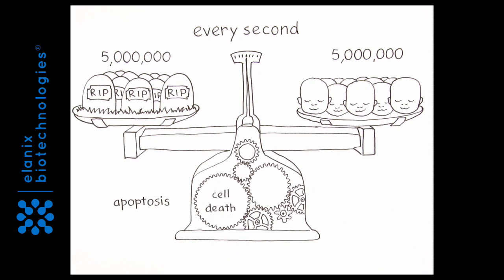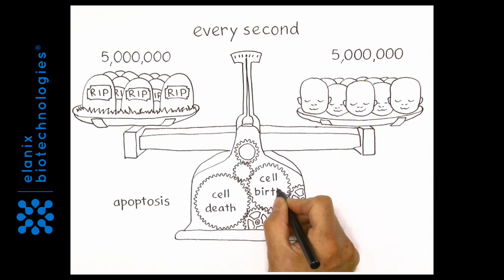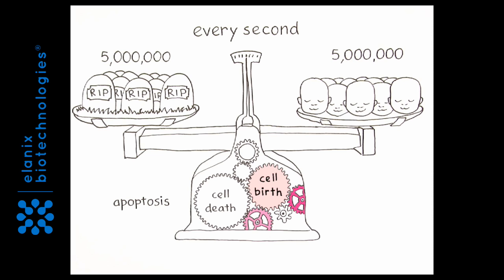The counterpart of apoptosis is programmed cell birth. It includes two highly regulated processes: cell division and cell differentiation.